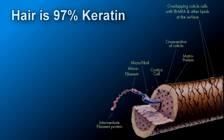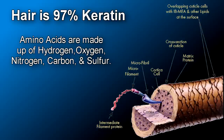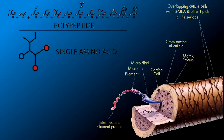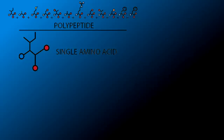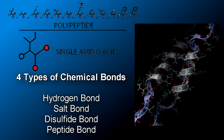First, we know that hair is composed primarily of the protein keratin — specifically 97%. Keratin is made up of amino acids containing hydrogen, oxygen, nitrogen, carbon, and sulfur. Within the cortex layer of the hair, these amino acids are formed together in a chain called a polypeptide chain, or helix coil. These polypeptide chains contain four different types of bonds, which gives our hair its shape, elasticity, curl, and strength.